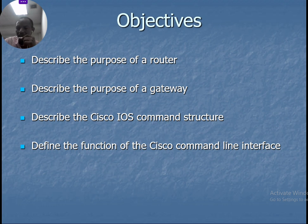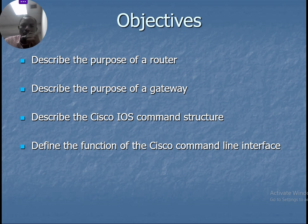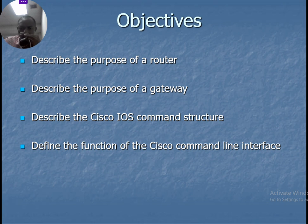The next objective is to describe the purpose of a gateway — why do we need a gateway if we have to send a message, packet, or data to the rest of the world. Then the next objective is to describe the Cisco Internetwork Operating System (IOS) command structure, which we'll look at in detail in the third part.